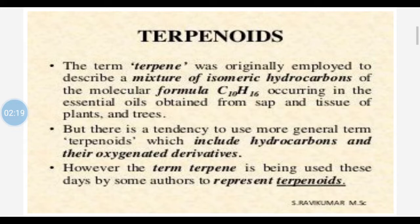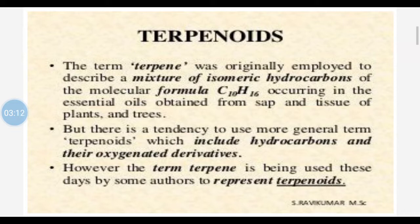Terpenoids are basically terpenes and they are made up of isoprene units. We will see what the isoprene unit means and what its chemical formula is. There is a tendency to use the more general term terpenoid, which chemically means hydrocarbons and their oxygenated derivatives. Terpenoids are present in plants and in drugs which contain mainly volatile oil as the chemical constituent. No volatile oil is free from terpenes. Volatile oils contain terpenes, and these terpenes are responsible for the fragrant odor or strong odor that the drug exhibits.